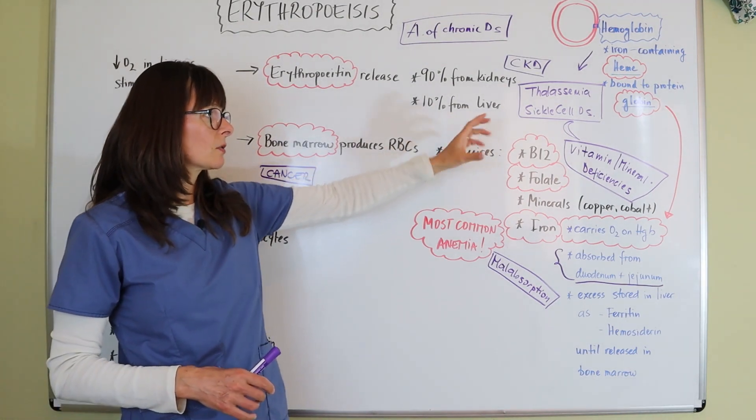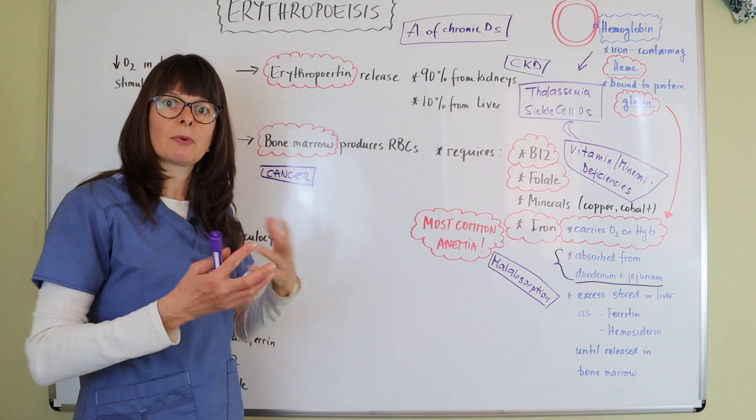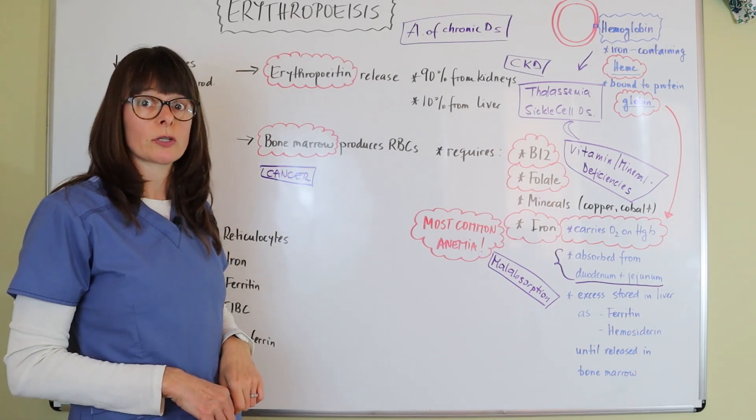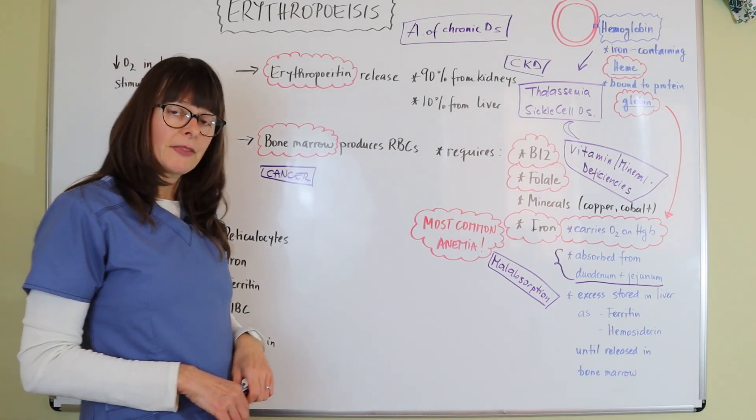Or also already know, for example, the sickle cell, if it's this half moon shape, what kinds of signs and symptoms is it going to cause. And then another important thing here.